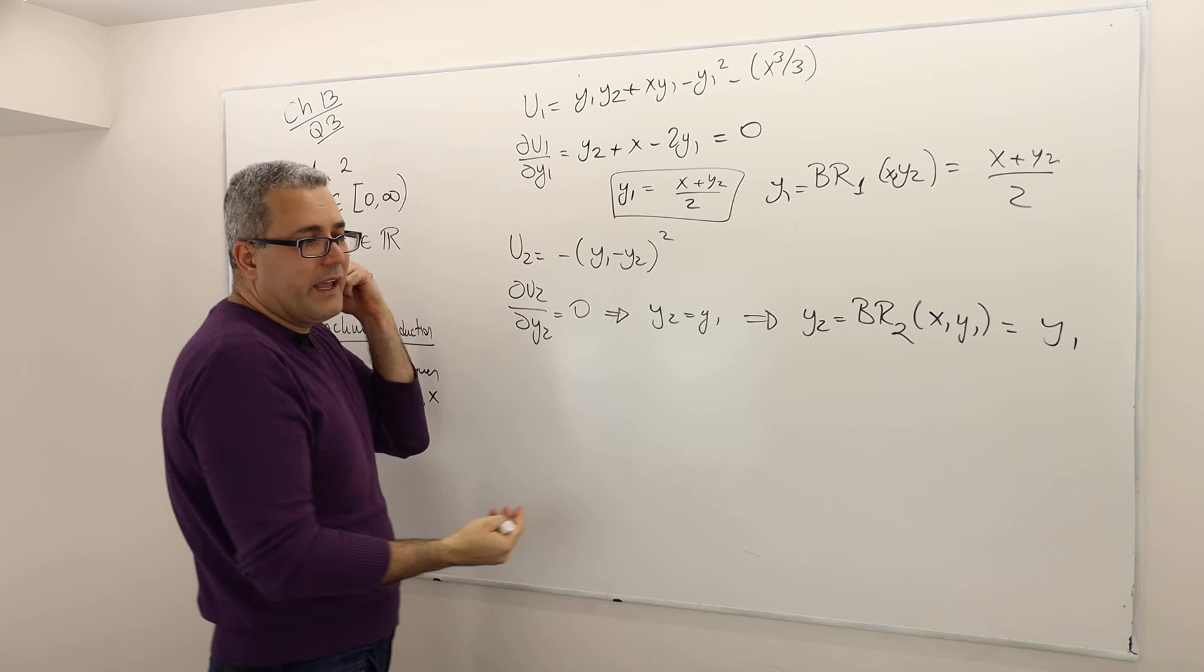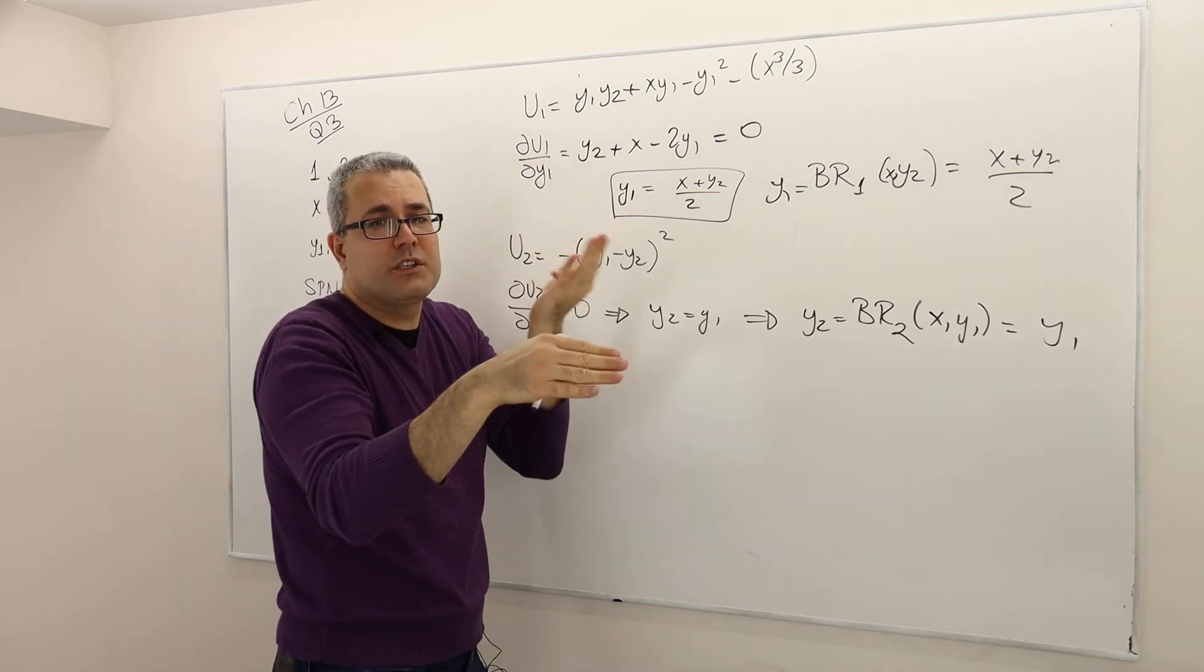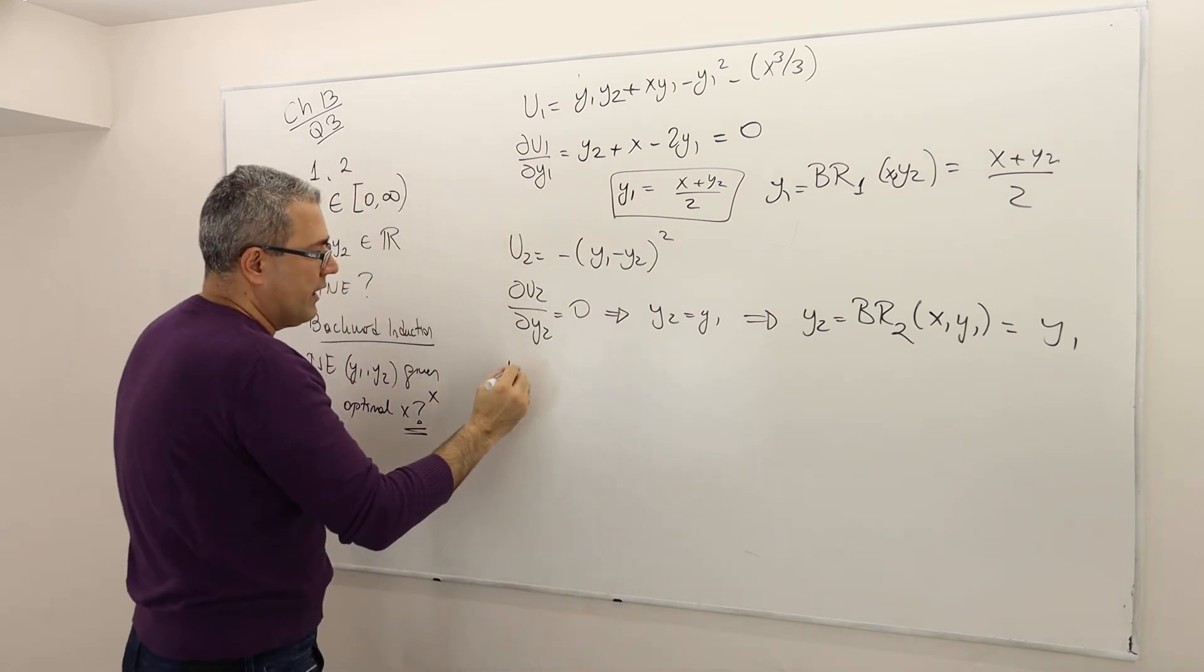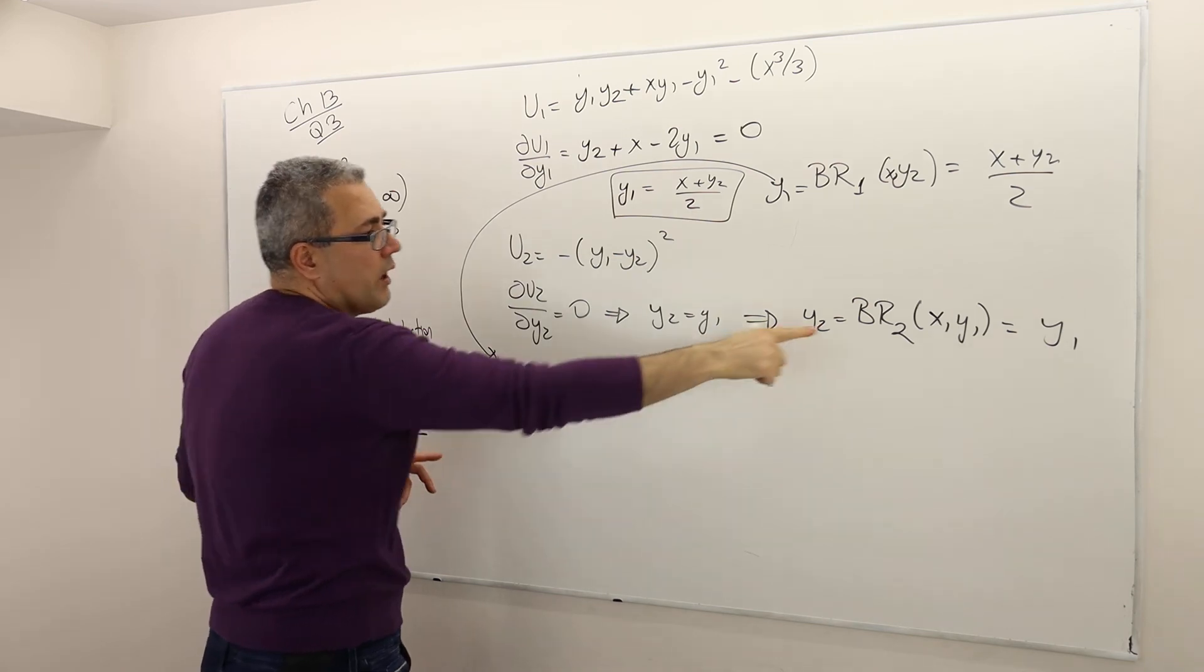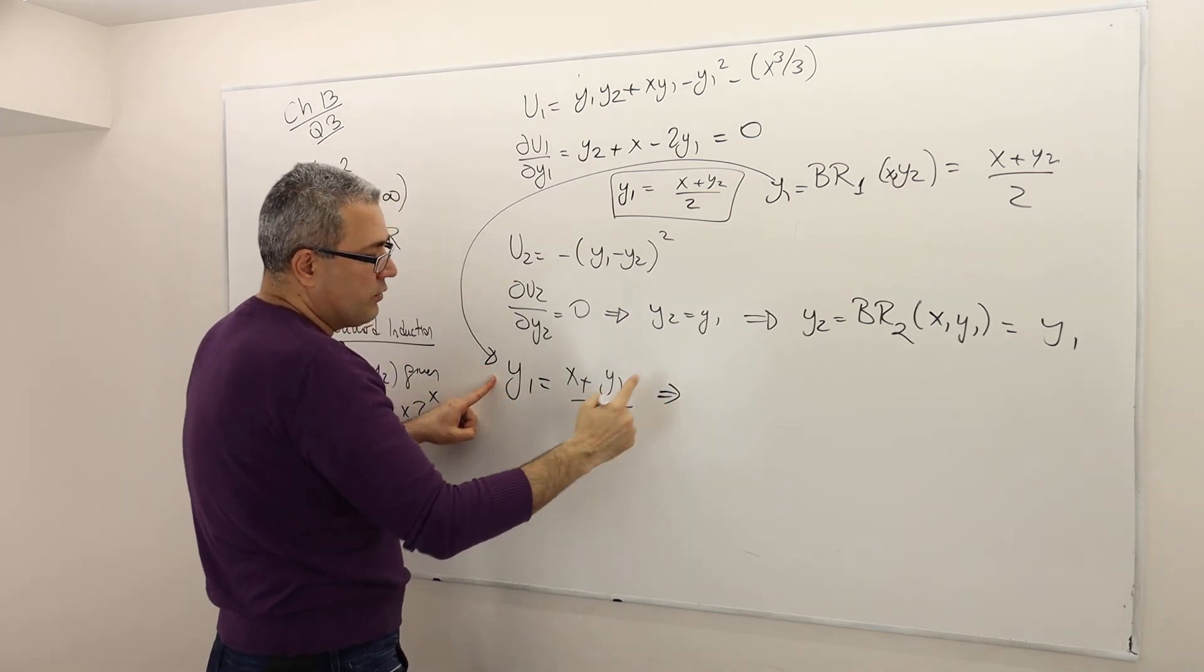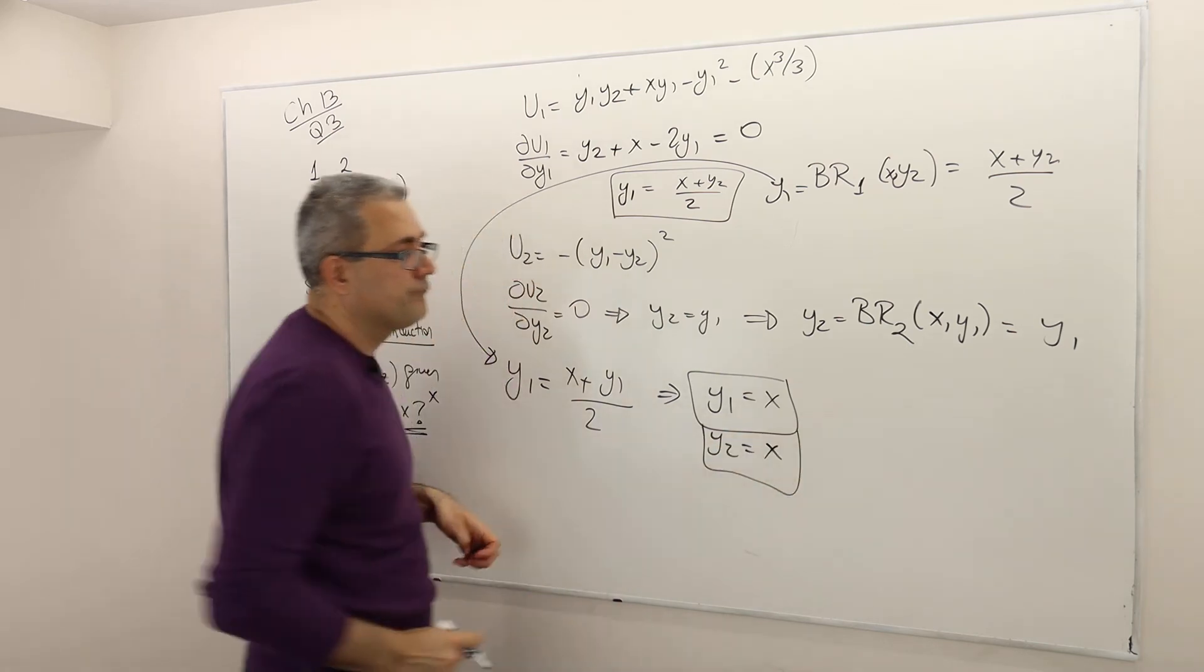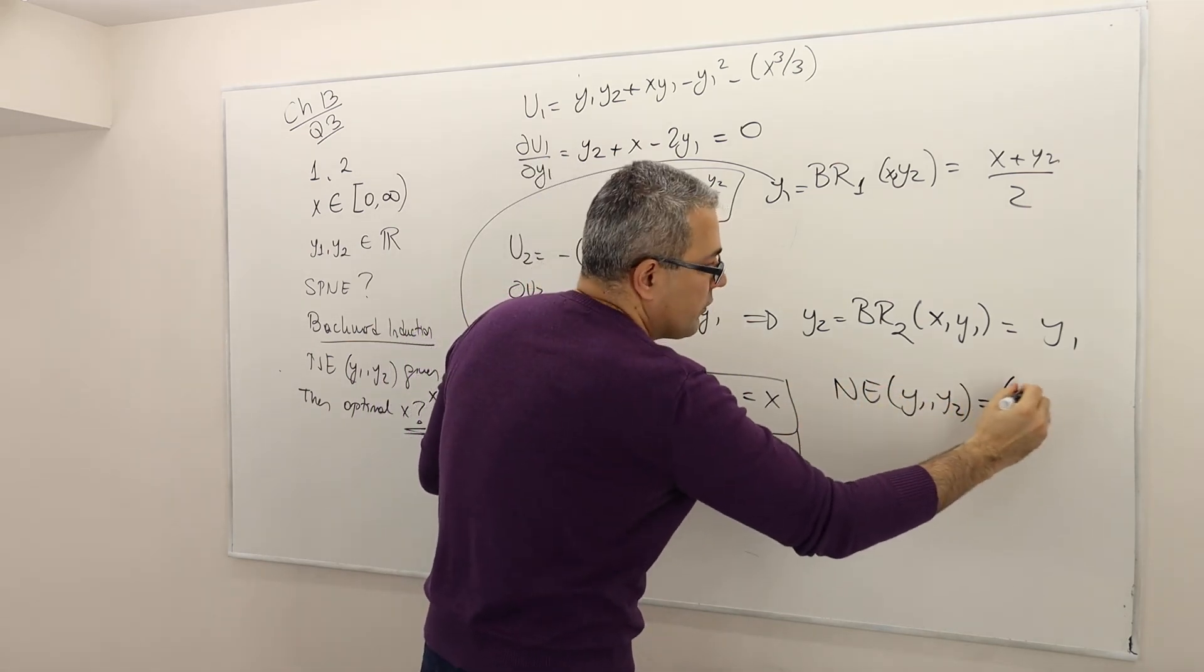That means now I have to find the Nash equilibrium. So I have to solve those best responses at the same time. Or you just find the intersection point of those two best responses. Which means, whenever you see y2, which is equal to y1, just plug y1 here. So that means y1 equals x + y2, which is y1 itself, divided by 2. If you solve this, it's 2y1 = x + y1. So y1 = x. And because y2 was equal to y1, y2 has to be equal to x as well. So that means the Nash equilibrium (y1, y2) is equal to (x, x).